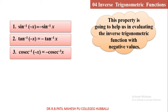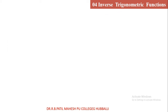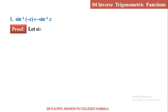These are the 3 results with negative values and you should express them as given. The proof of 1, 2, 3 — first one: sin inverse of minus x is equal to minus sin inverse x. Let sin inverse of minus x equal to theta.